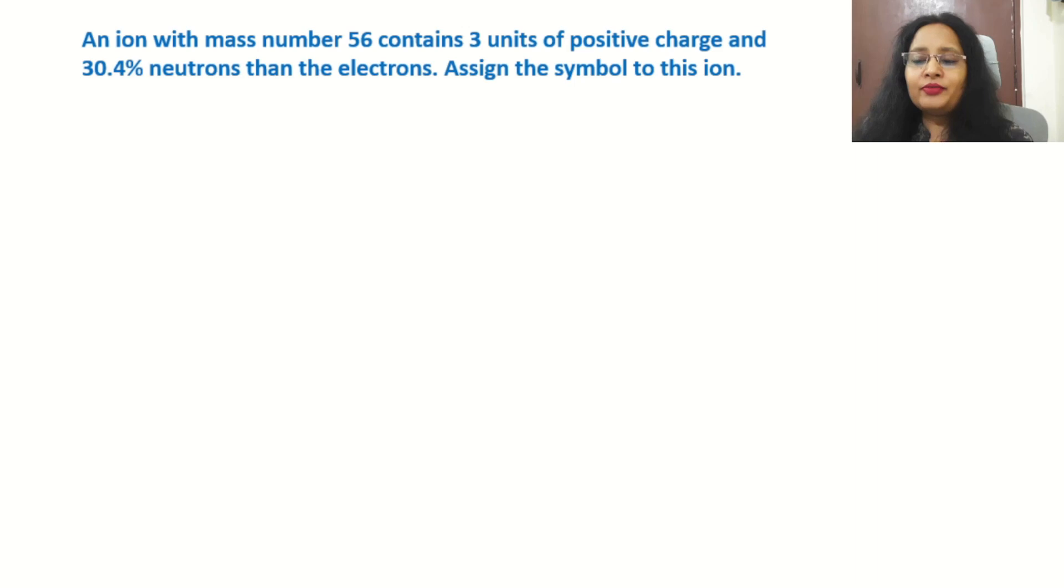An ion with mass number 56 contains 3 units of positive charge and 30.4% more neutrons than the electrons. Now assign the symbol to this ion. So friends, this question, just like we have question number 2.43, it will be the same procedure.